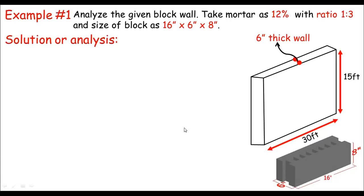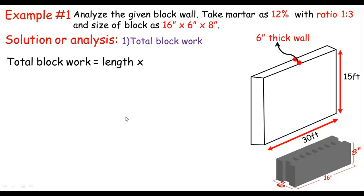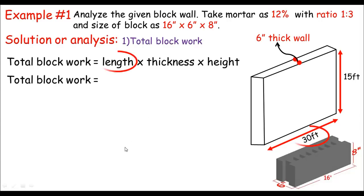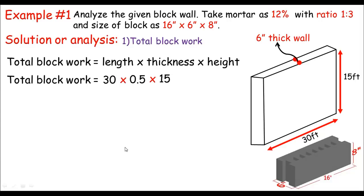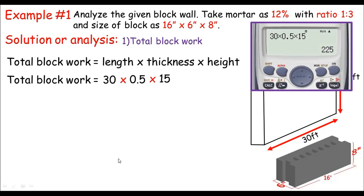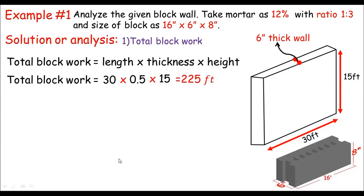In the solution, the first thing to calculate is the total block work. Total block work equals length × thickness × height, which is 30 feet × 0.5 feet × 15 feet. Doing the math, the total block work is 225 CFT (cubic feet).